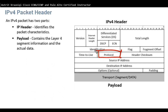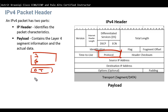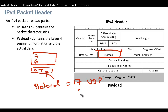Then we have the Protocol field. In the Protocol field, we identify what Transport Layer protocol is being used. For example, a value of 17 means UDP, a value of 6 means TCP, and a value of 1 means ICMP. So from this field, we can identify what Layer 4 protocol is carrying the data.